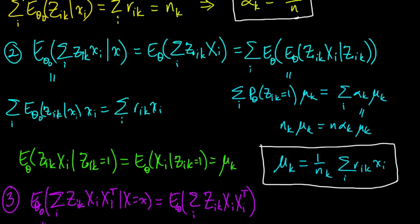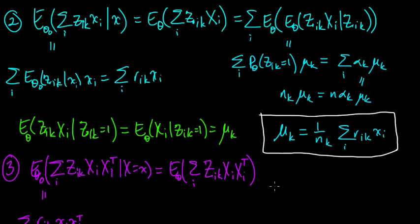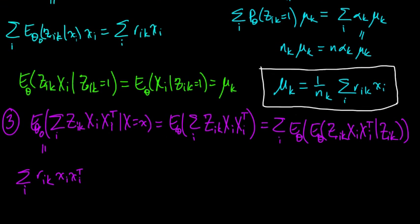How about this one? We're going to take a similar approach to before. We broke the expectation up into an expectation of a conditional expectation. We already have the sum: zik, xi, xi transpose. Given zik.